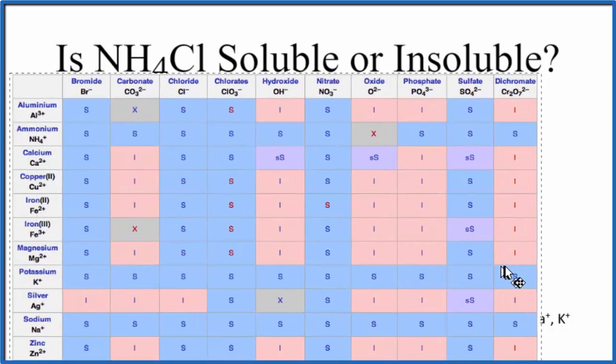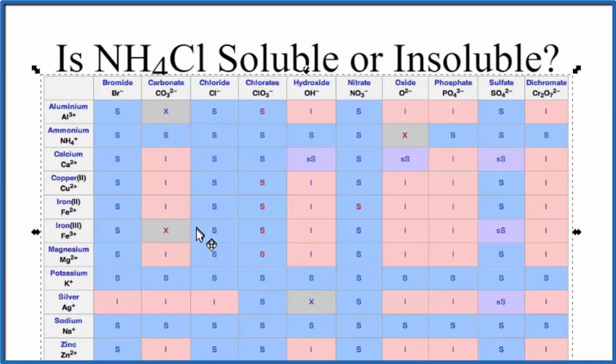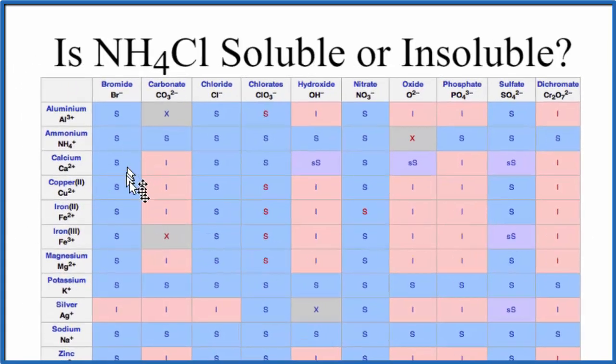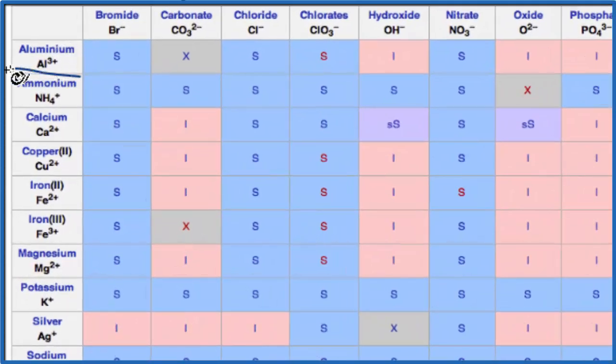We can also take a look at a solubility chart. So here is a solubility chart, and as we look down, we see ammonium right here, that NH4+, and then on the top, we're looking for chloride right here, Cl-.